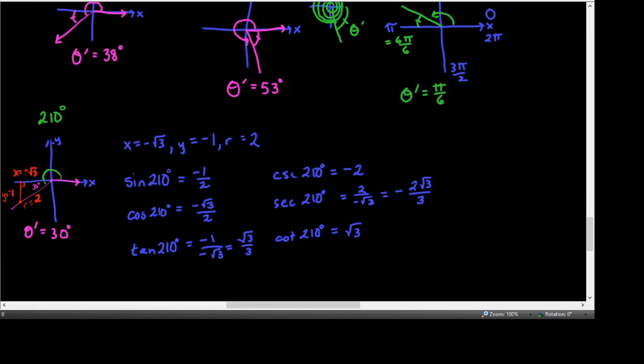For a non-quadrantal angle, the general procedure is: first find the least positive coterminal angle, then find the reference angle θ'. Use the reference triangle from a special triangle (30-60-90 or 45-45-90) to get side lengths, then assign correct signs based on whether x and y are positive or negative in the given quadrant. Remember, r is always positive. We've run out of space, so we'll end this recording and continue in the next one.